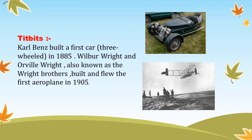Now children, it's time for some interesting facts — we call them tidbits. The first one is that Karl Benz built the first car in 1885, and that car was a three-wheeled car. You can see in the picture what that three-wheeled car looks like. The next one is that Wilbur Wright and Orville Wright, also known as the Wright brothers, built and flew the first aeroplane in 1905. You can see the picture of the Wright brothers' plane just beside the tidbits.